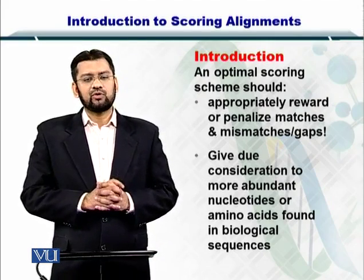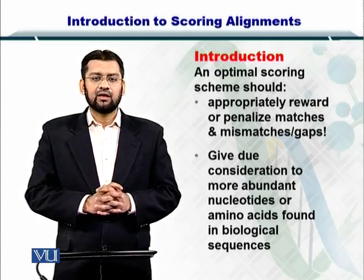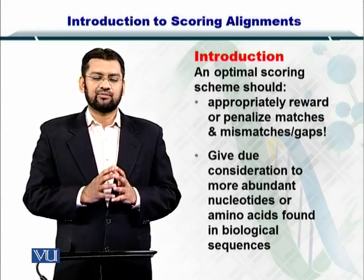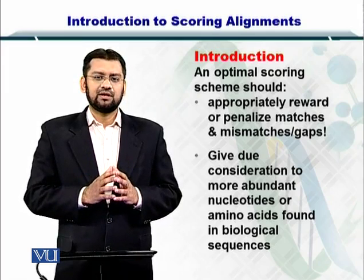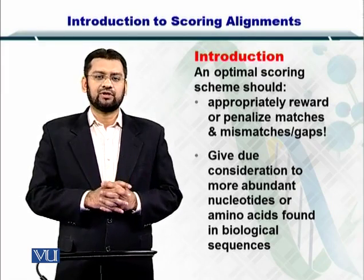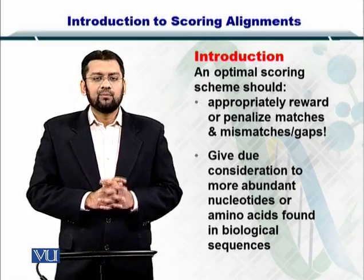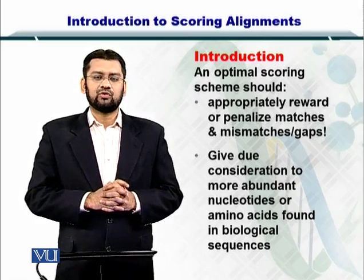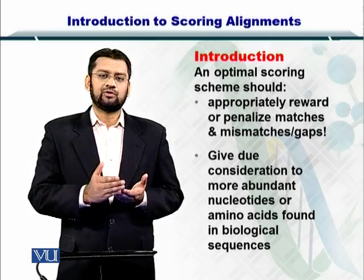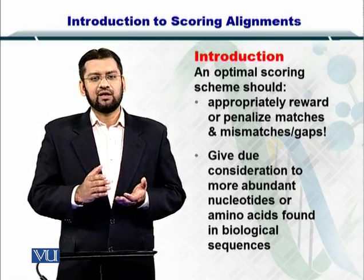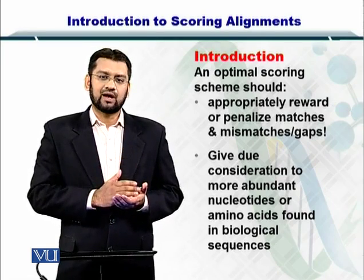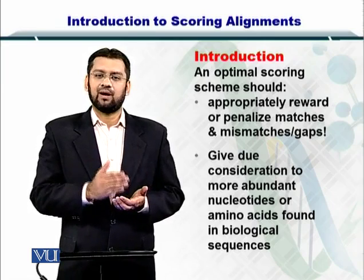The optimal scoring scheme should consider a matching reward for nucleotide substitution and matching. A gap penalty should be appropriately awarded based on insertion or deletion, and more consideration should be paid to abundant and less abundant nucleotides. If a nucleotide is known to be substituted by another nucleotide frequently, then we should not mind it as much as for the case where a nucleotide is not known to be substituted by another nucleotide.